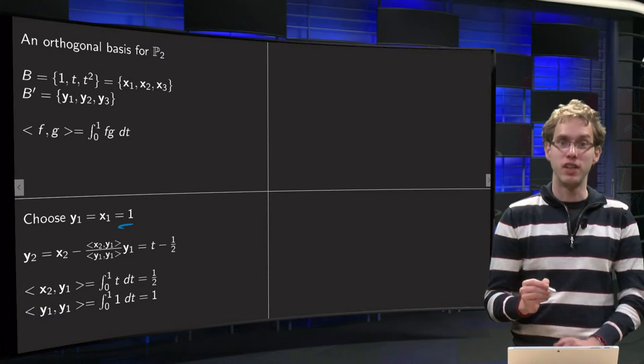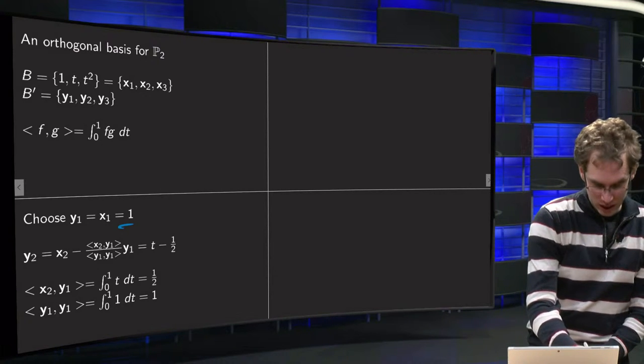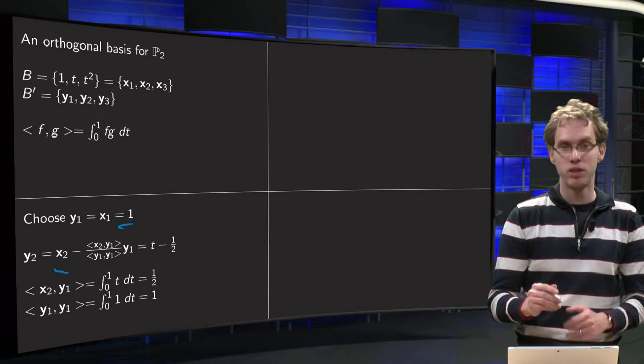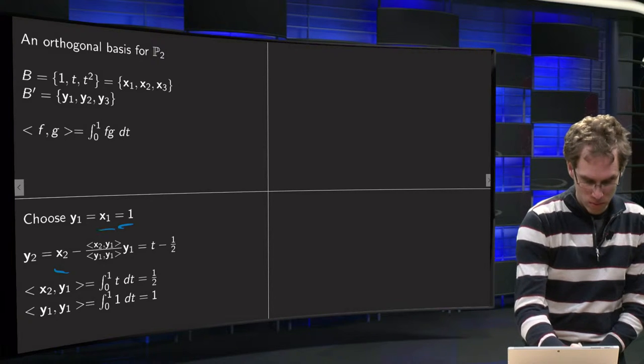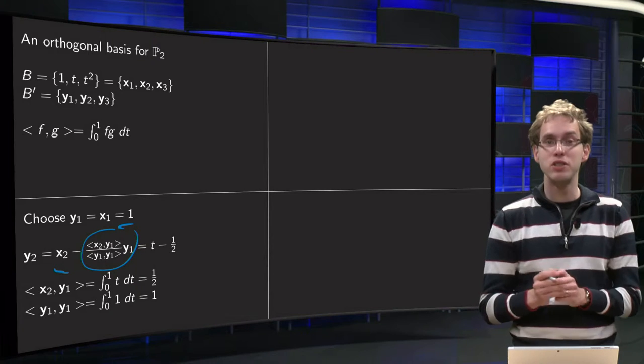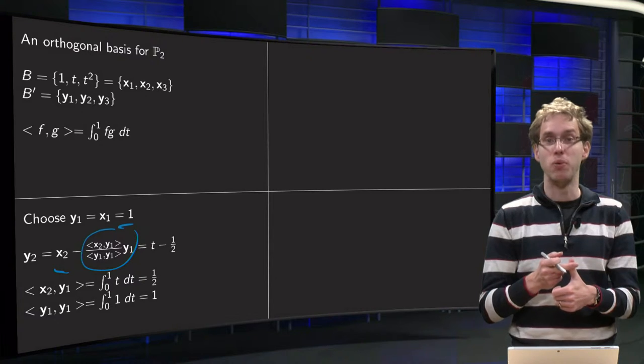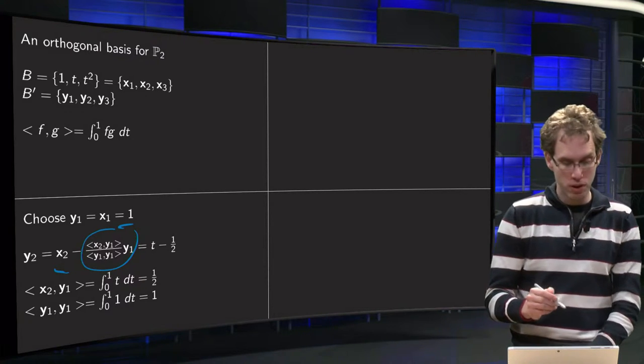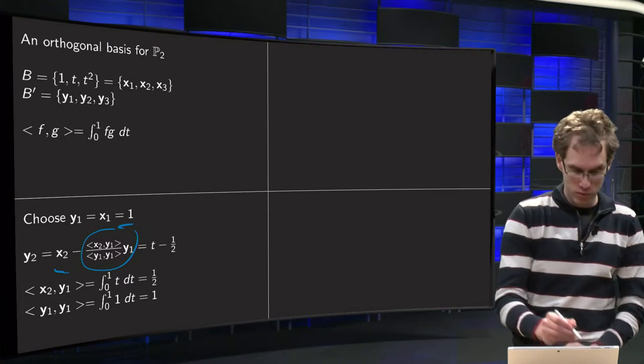Remember the general formula of Gram-Schmidt: y2 equals x2 minus the projection of x2 on the previous factors. Well, previous factors is only one, so that gives us only one projection. So we have to compute x2 minus the projection of x2 on y1. And for that we need inner product x2, y1, and y1, y1. We can compute those inner products: x2 equals t, and y1 equals 1, so 1 times t.